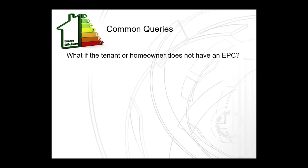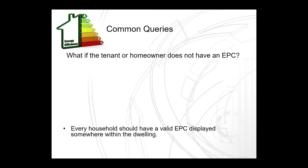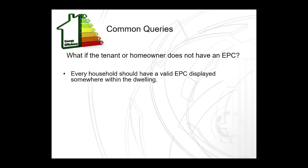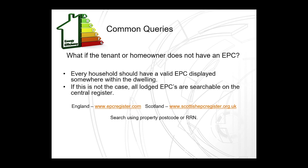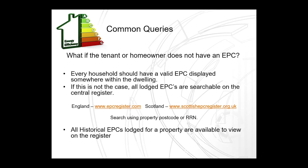What if you cannot find an EPC in the home and no one is able to help you find it? Every household should have a valid EPC displayed somewhere within the dwelling. But if this is not the case, all lodged EPCs are searchable on the central register — either on the English and Welsh website at www.epcregister.com or on the Scottish website at www.scottishepcregister.org.uk. You can search using either the property postcode or the unique reference number (RRN), and all historical EPCs lodged for a property are available to view on the register.